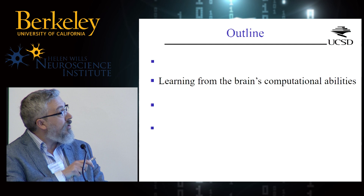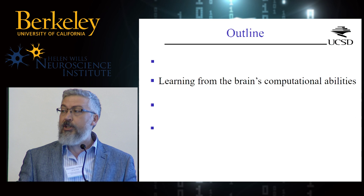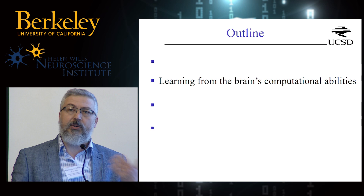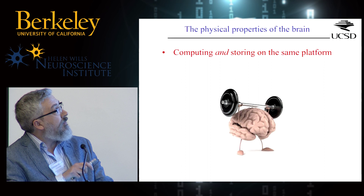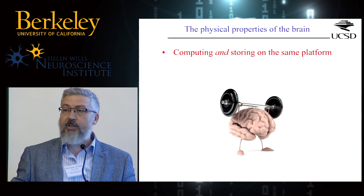I would like to learn from the brain, but my goal is not to emulate the brain at all. What I want to understand is whether there are a minimal number of features that the brain has that we can transfer into the solid state, and if so, what type of computational power we gain by having those features reproduced there. We know the brain has important features — one of these is that it computes and stores on the same physical platform. There is no separate CPU and memory; the whole computation is done on the same physical location.